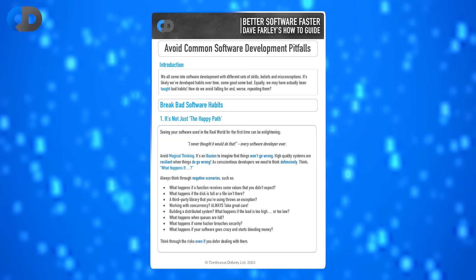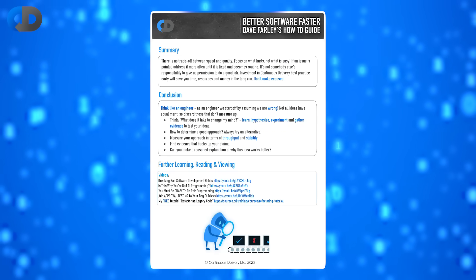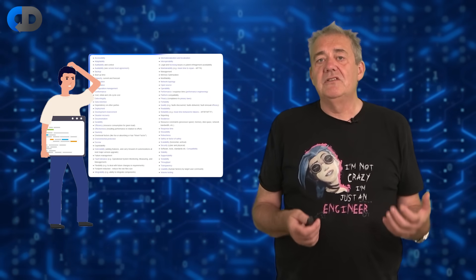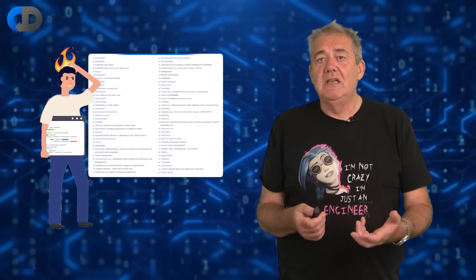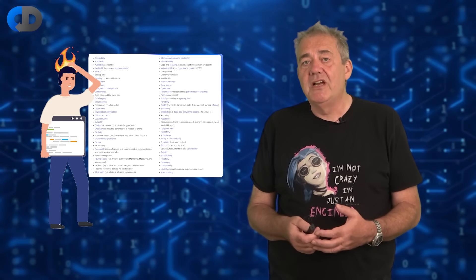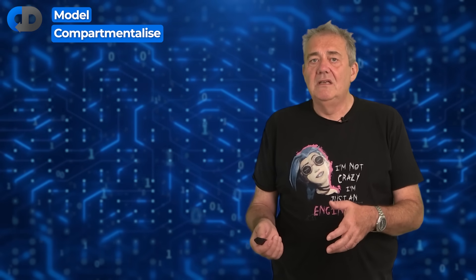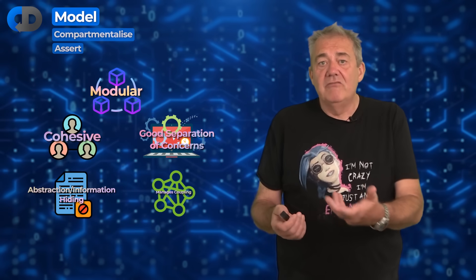I have a new free how-to guide on how to avoid some of the commoner software development pitfalls — check out the link in the description below. These cross-cutting requirements need us to think about them every time we touch the code. This is so daunting that we would be idiots to design our system in a way that forces everyone to think like this in detail for every change. But these things are complicated and slippery. So in reality, I'd suggest that the answer comes in three parts: model, compartmentalize, and assert.